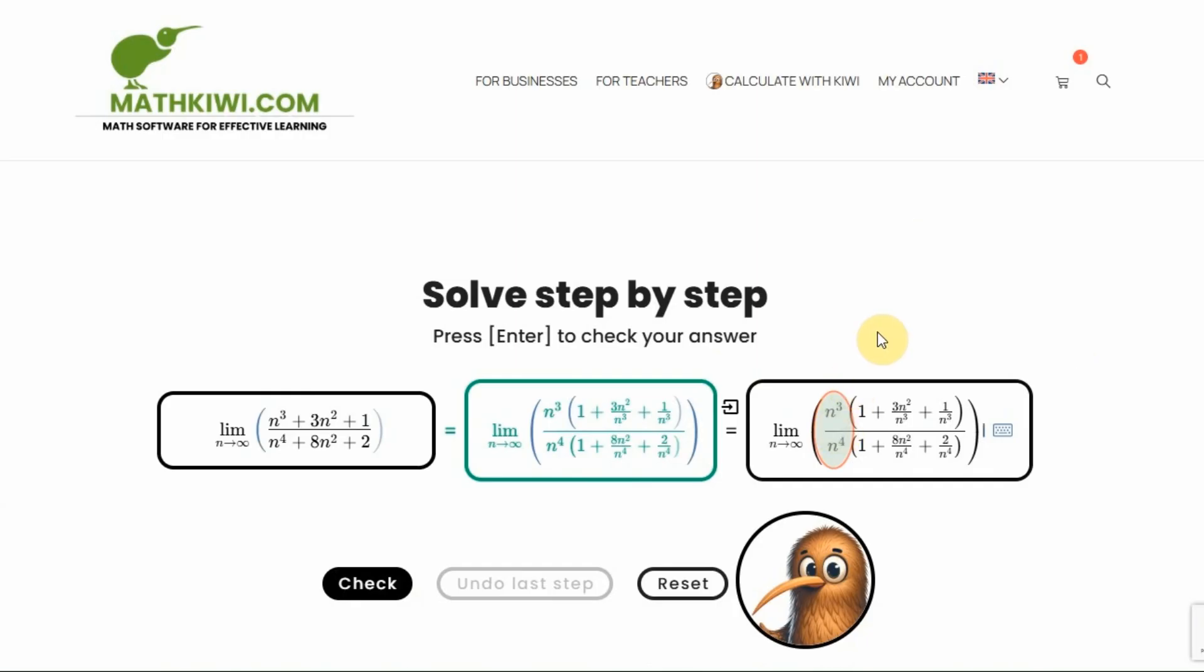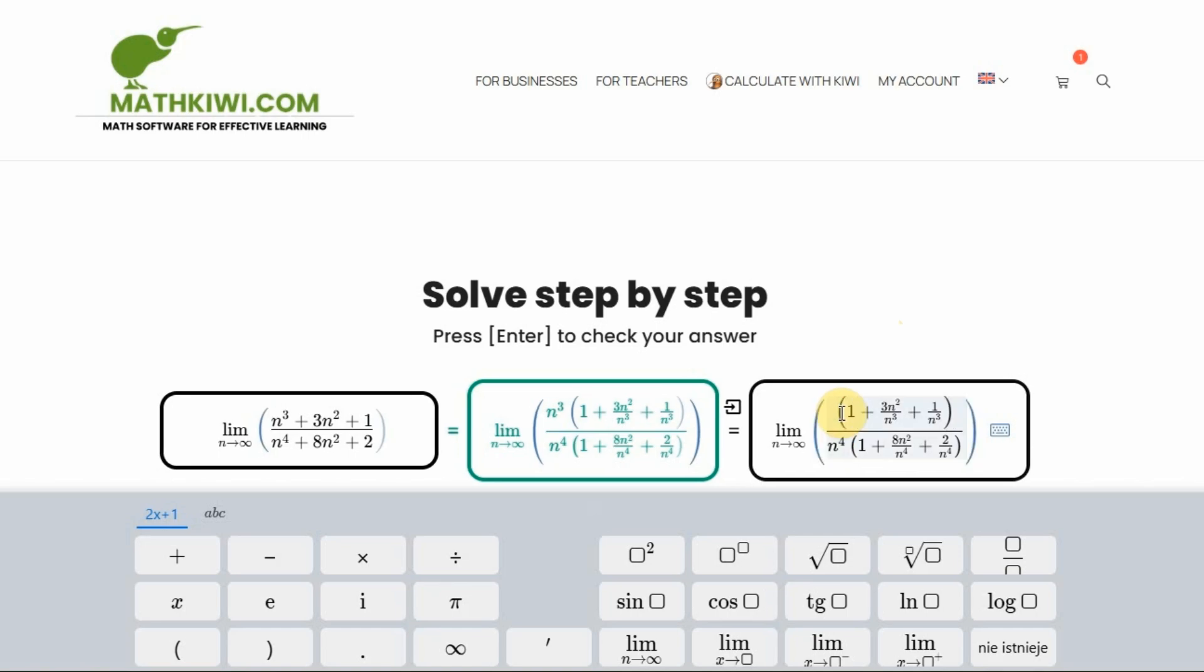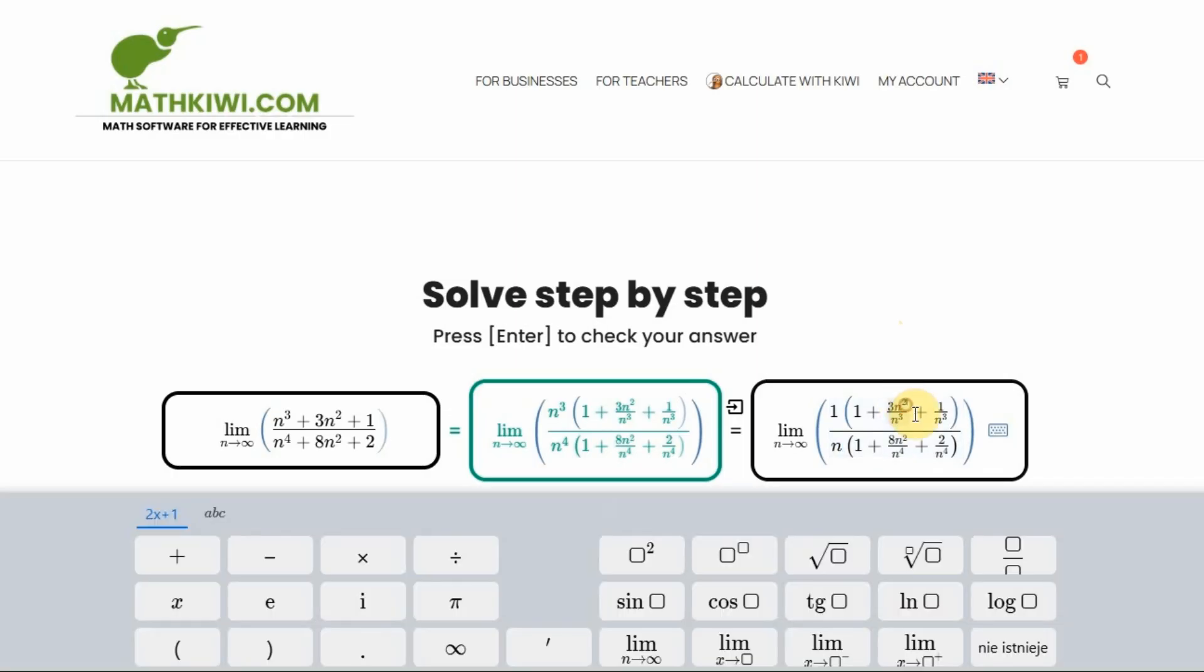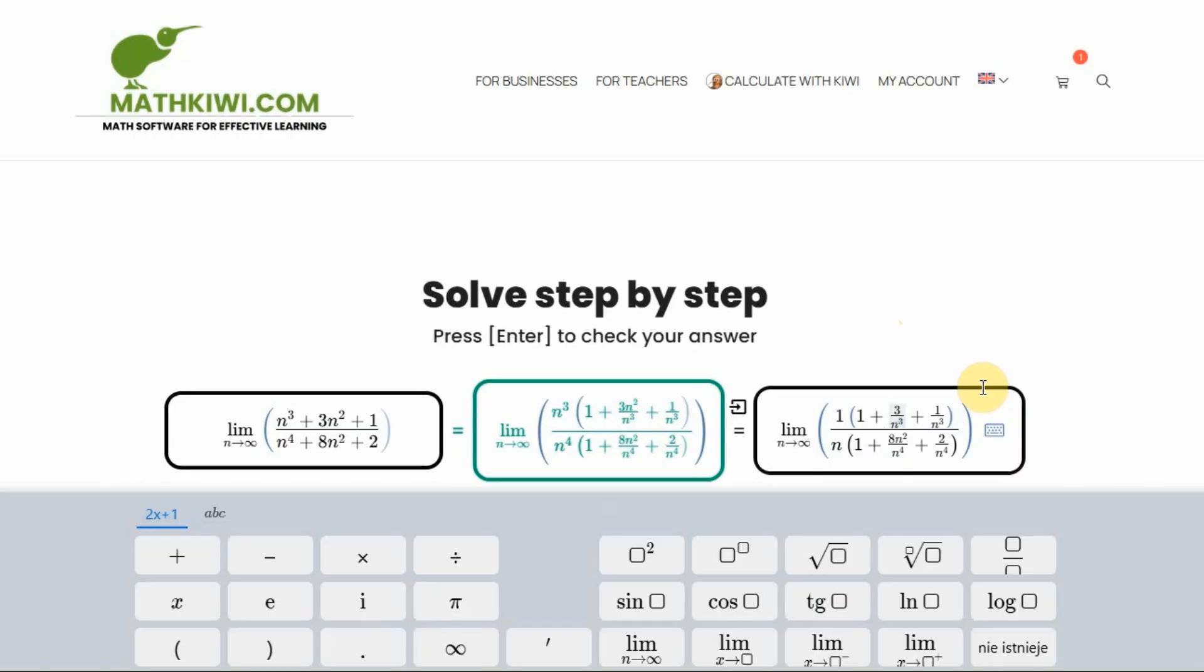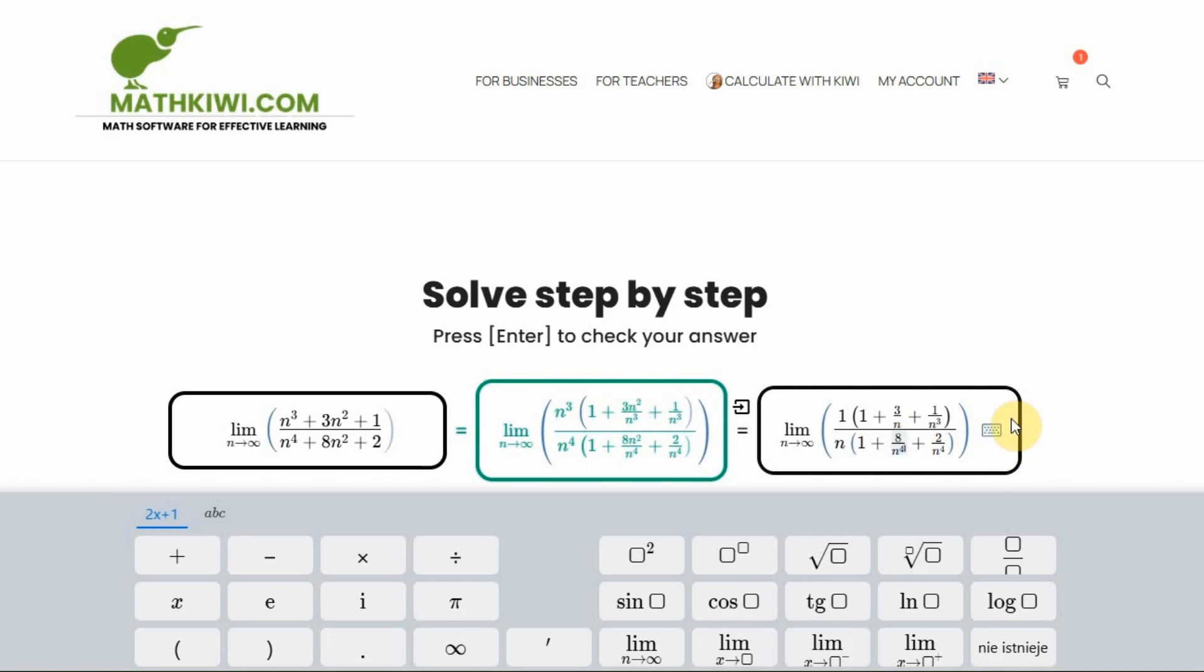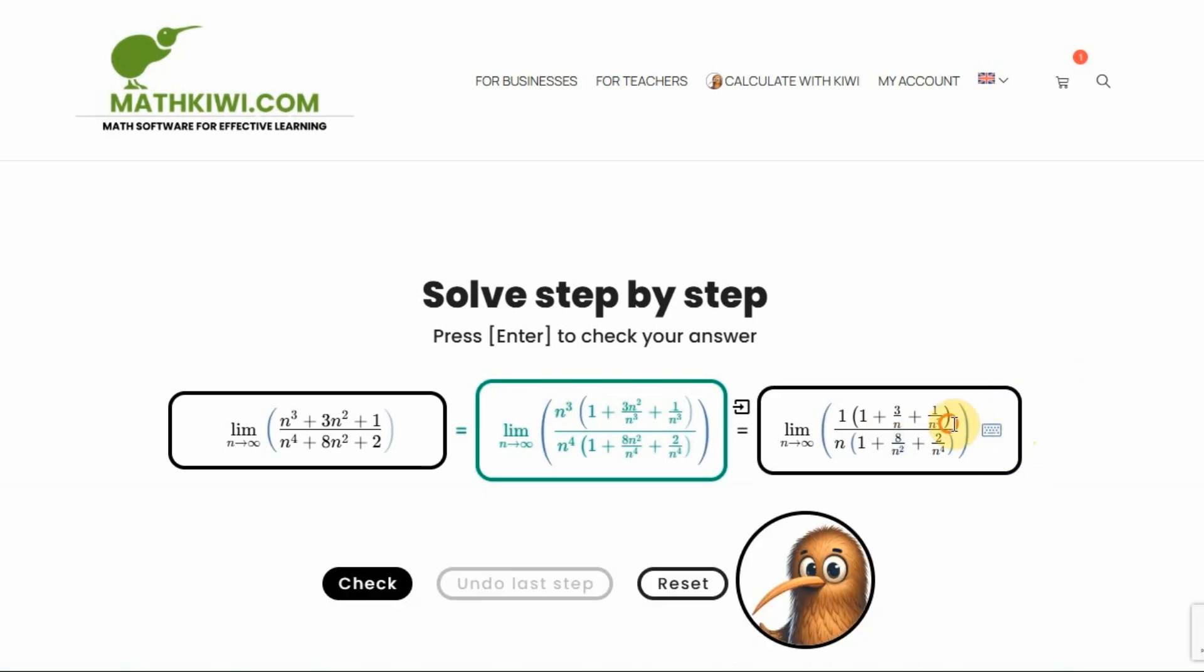n to the third and n to the fourth will be shortened. In what way? At the top. Well, it will simply be 1, right? Maybe I'll even write it like that. And at the bottom there will be n. This is clear. Simple shortening of powers somewhere in the previous grades of education. Here n squared and n to the third will be shortened. Agreed. n will remain here. Here also n squared and n to the fourth will be shortened. n squared will remain here.